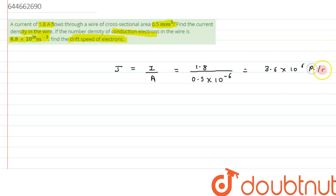So this is the value of current density we are getting. Now in the second part of the question, we are interested in finding the drift speed of the electron.